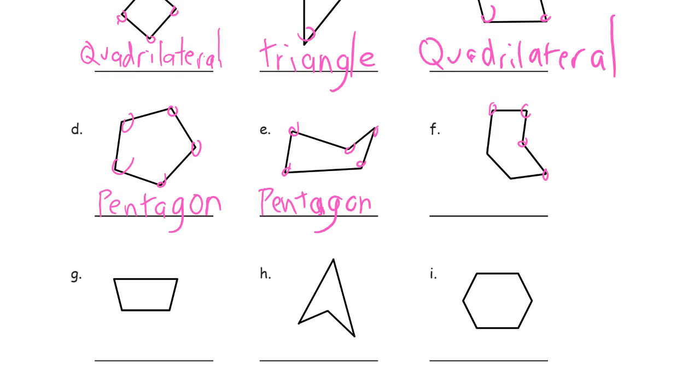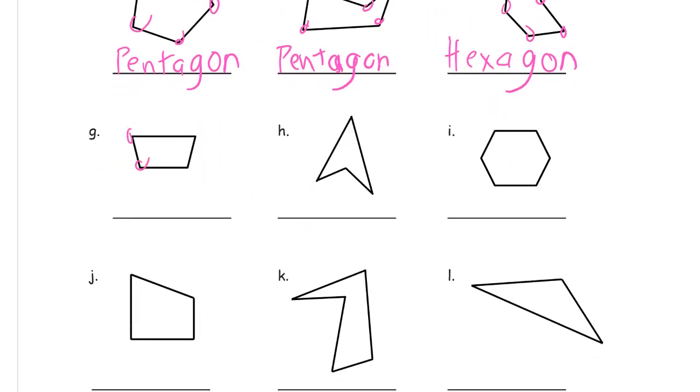So, 1, 2, 3, 4, 5, 6. Hexagon. And my A looks kind of like a 9 there, so I'm going to clean that up. And my next one here. 1, 2, 3, 4. That's a quadrilateral. 1, 2, 3, 4. There's another quadrilateral. 1, 2, 3, 4, 5, 6. That's a hexagon.